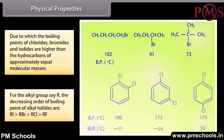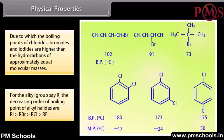For a given alkyl group R, the decreasing order of boiling points of alkyl halides is: RI has the highest boiling point, followed by RBr, then RCl, and then RF.